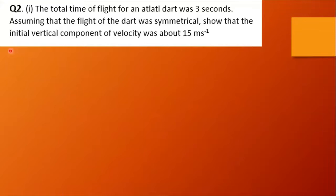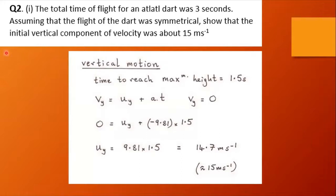The total time of flight for an atlatl dart was 3 seconds. Assuming that the flight of the dart was symmetrical, show that the initial vertical component of the velocity was about 15 meters per second. Well, the time taken to reach the maximum height is 1.5 seconds, that's half the total time of flight. Using v equals u plus at.